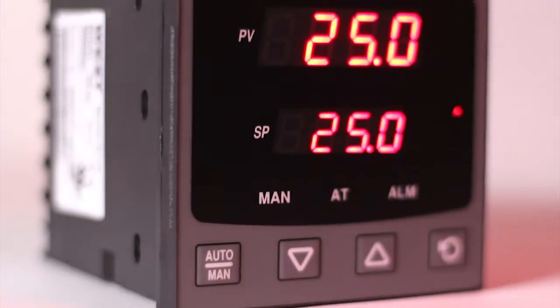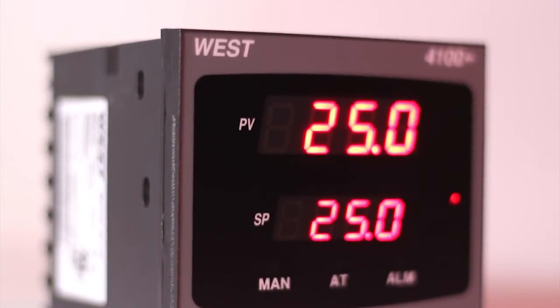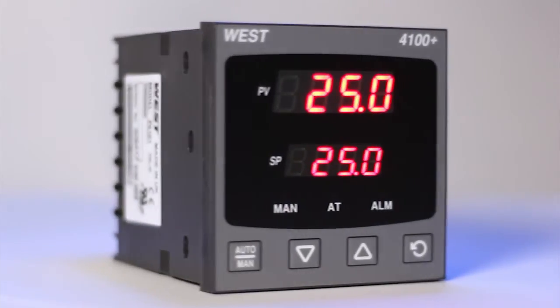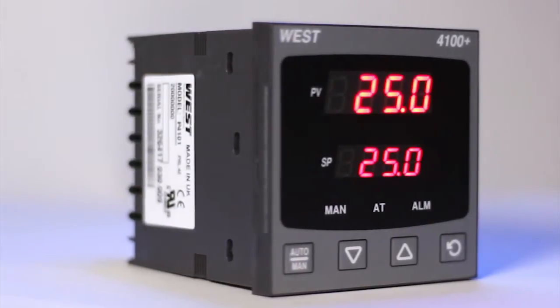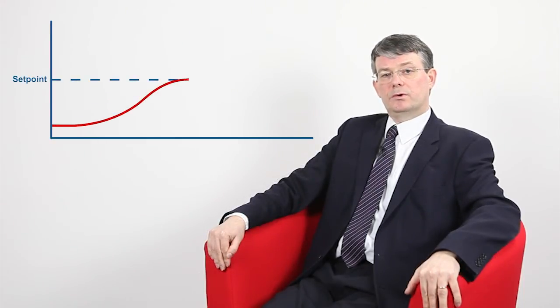Set point ramping is available on most of our controllers. It is used to protect the process or the equipment from quality problems or damage that may occur if sudden changes were allowed to happen in the process value. Without the set point ramping feature, any change in the set point would cause the process to be driven to the new value at the fastest rate that it was capable of moving.